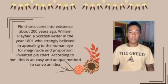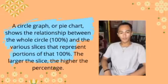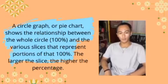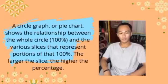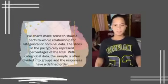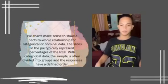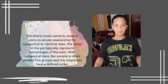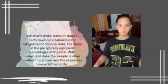According to him, this is an easy and unique method to convey an idea. A circle graph or pie chart shows the relationship between the whole circle, or 100 percent, and the various slices that represent portions of that 100 percent. The larger the slice, the higher the percentage. Pie charts make sense to show parts-to-whole relationships for categorical or nominal data. The slices in the pie typically represent percentages of the total.